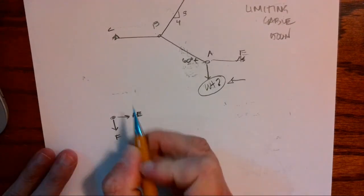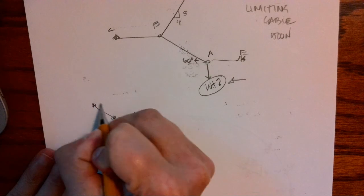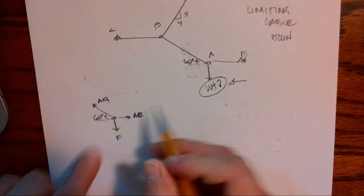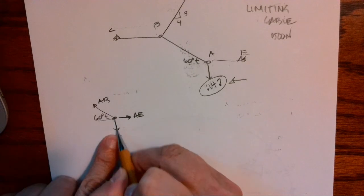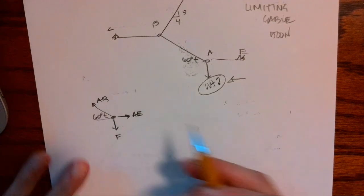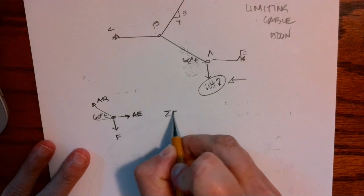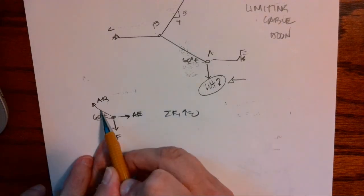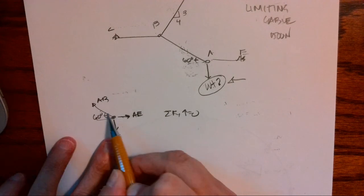We're just going to call this F, it's our unknown force, and we have AE and we have AB. Again, I've drawn these and I'm showing tension pulling, pulling, pulling. Those are all in tension, they're cables so they're in tension. I'm going to start with summing forces in the Y direction.